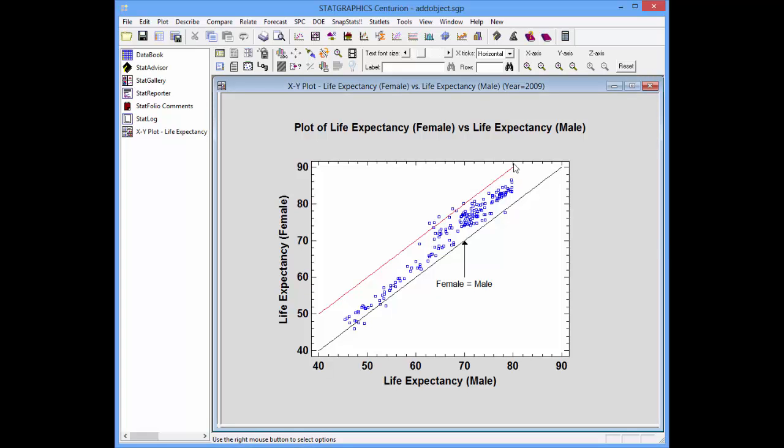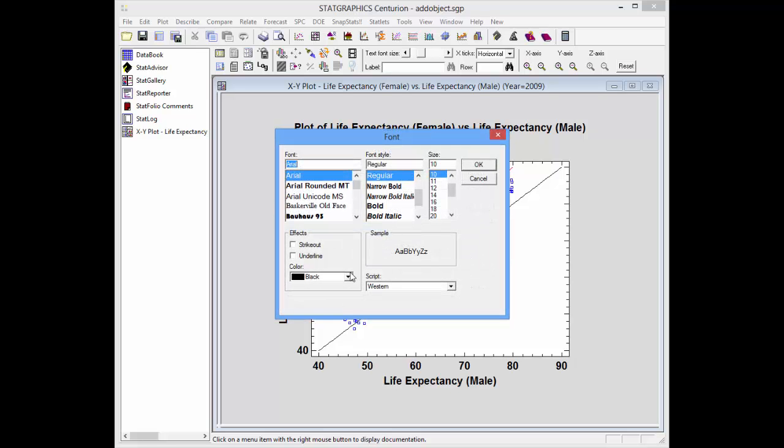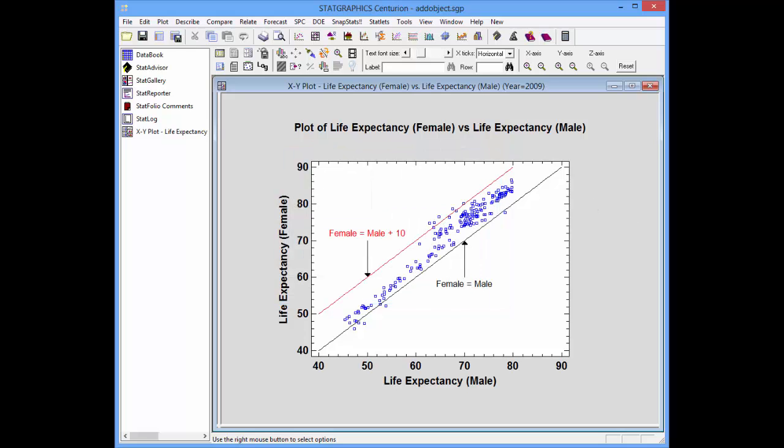Now let's label the second line. I'll go back to the add object dialog box, tell it I want an arrow. This arrow I'd like to point to the position X equals 50, Y equals 60. The type of arrow I want this time is a downward pointing arrow, and the text I want to enter is female equals male plus 10. Let's also change the fonts. I think I'll make this text red. Push OK, push apply and you'll see I now have a second label pointing at my second reference line.